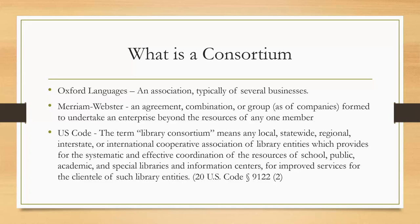Consortia can be local — an example of that would be something like the Houston Area Library Automation Network, HALAN, which was a consortium that handled library automation in the Houston area. It can be statewide — NIMCAL, the New Mexico Consortium of Academic Libraries, is an example of a statewide consortium here in New Mexico.